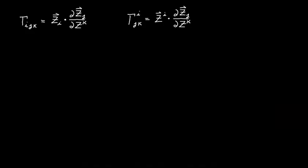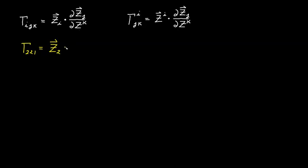For the past few videos we've been analyzing the Christoffel symbol. Today we want to answer the question: how do you evaluate these things? One way is to simply appeal to their basic definitions. For example, if we wanted to find the Christoffel symbol of the first kind Γ₂₂₁, we'd need the covariant basis vector e₂ and find the dot product of that with its partial derivative with respect to z¹. So we need to dot z₂ with the partial of z₂ with respect to z¹. All we're doing here is mapping out the individual index values as per the formula.